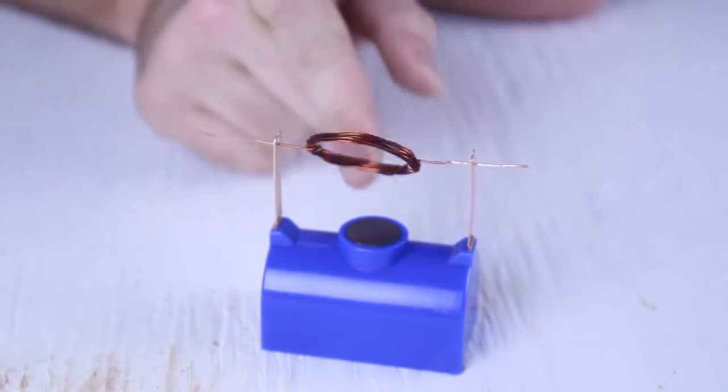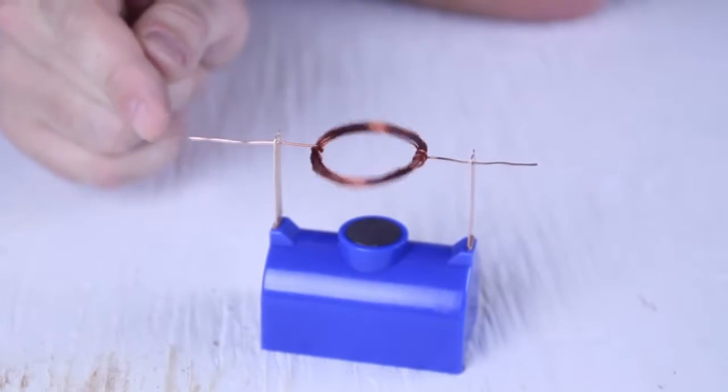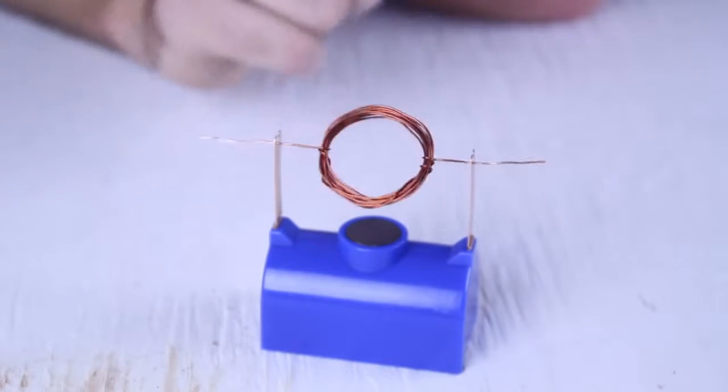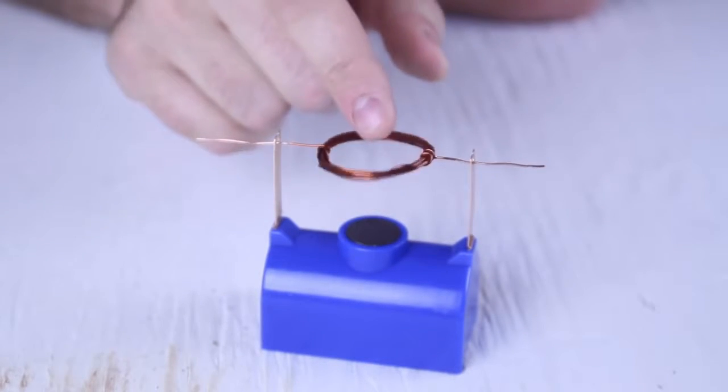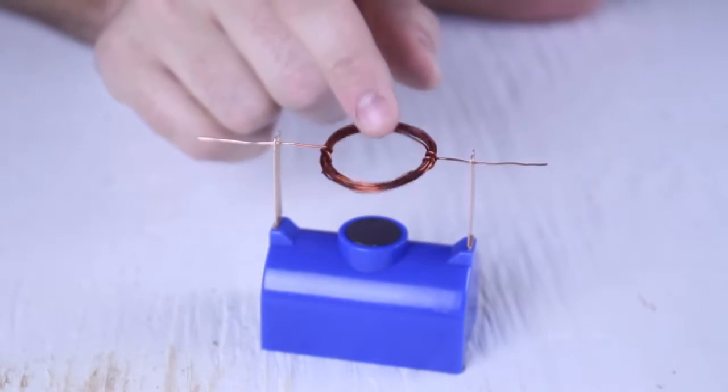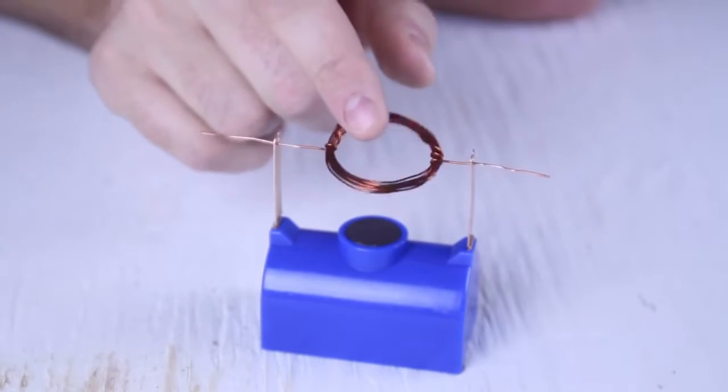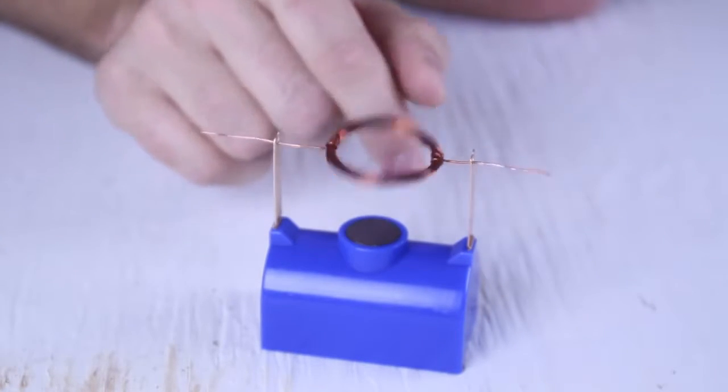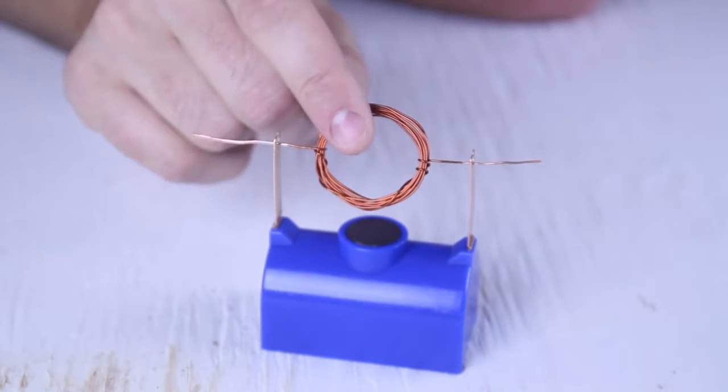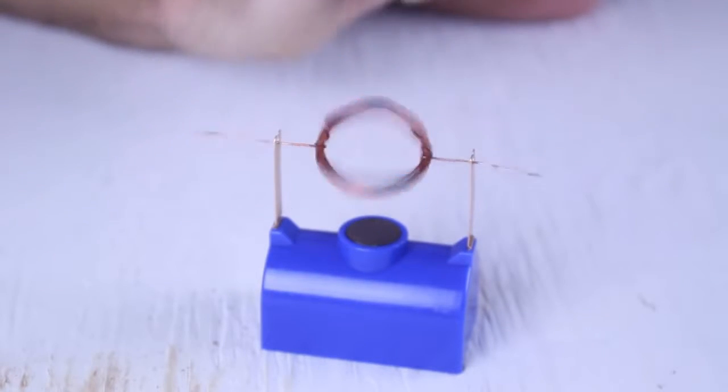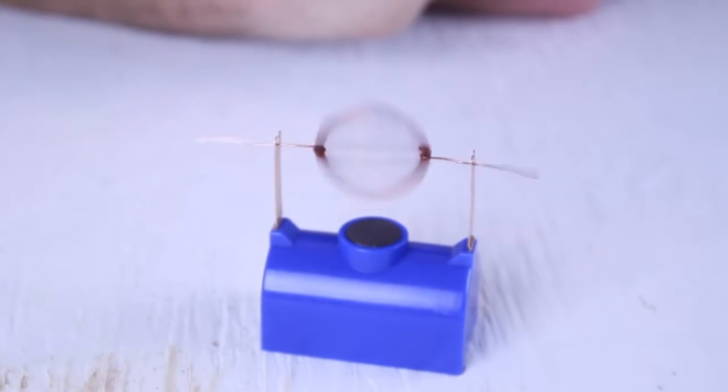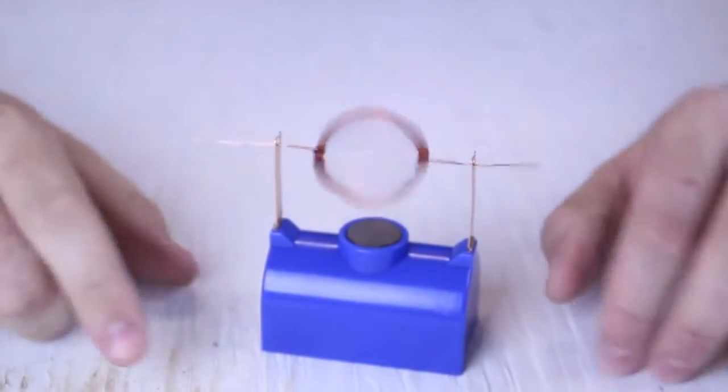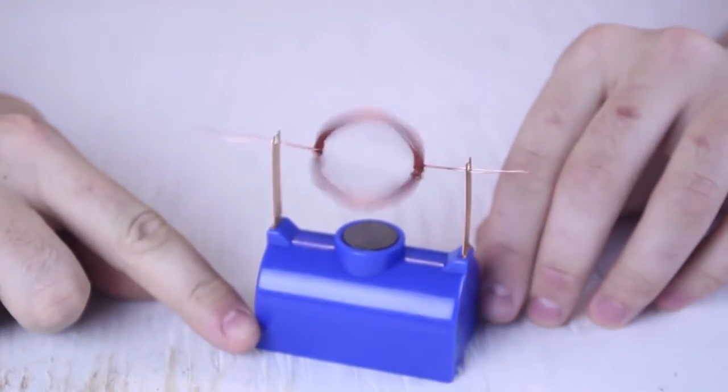And you know why it stopped? Because it got off center. It has to be over the magnet. You see how it spins? And just give it a little spin right here. It doesn't want to go. Boom! One little spin and it's gonna go as fast as it possibly can.